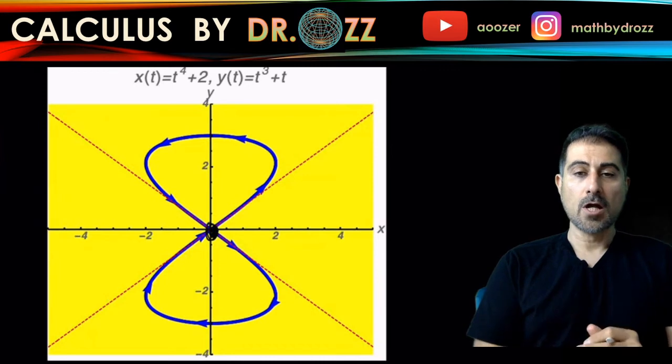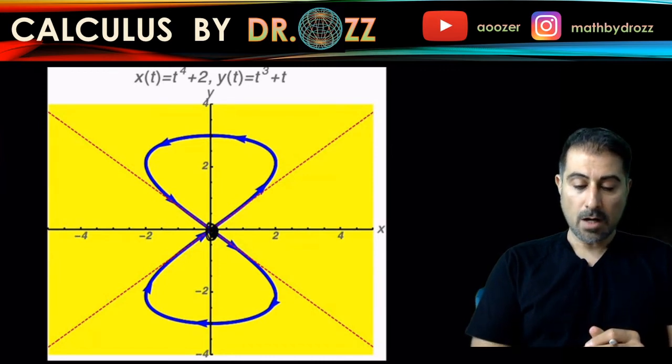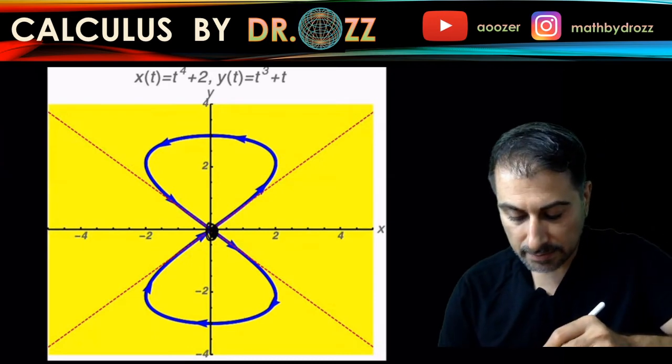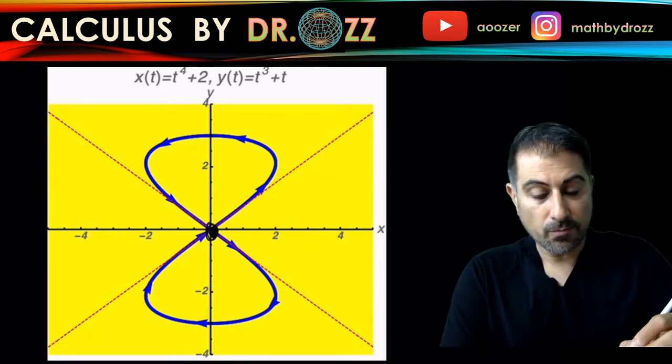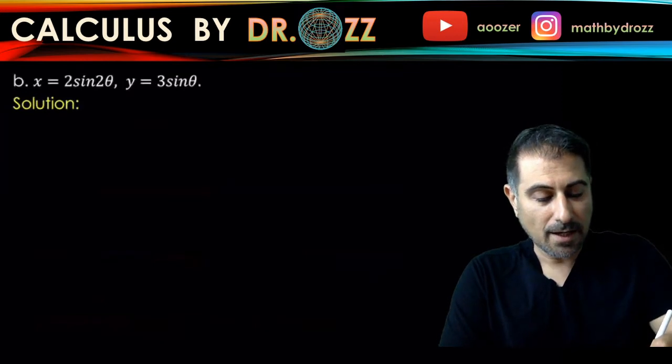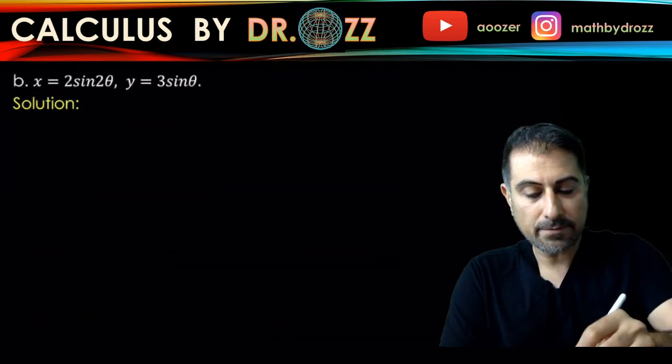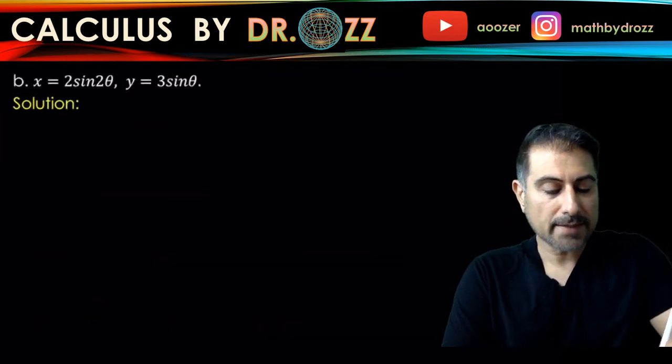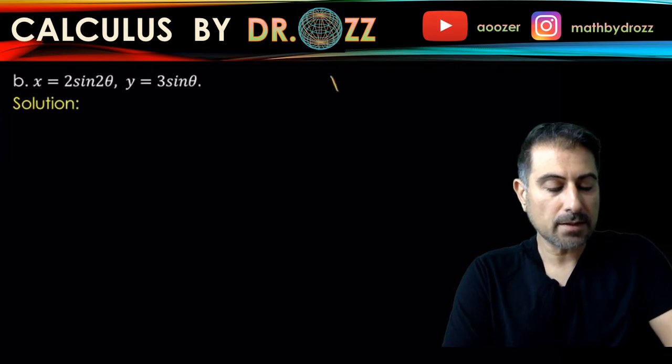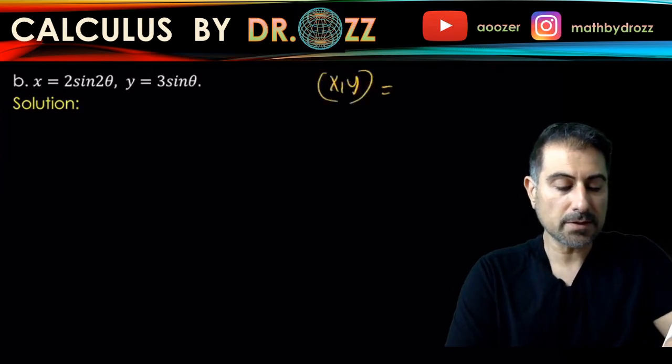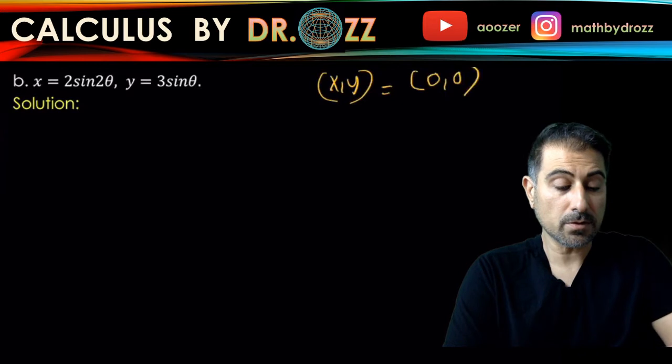You have to graph it and keep your t min, t max to be large enough so that you can actually see the full picture of this graph. Since this happens at the origin, origin means you have x and y to be exactly equal to zero.